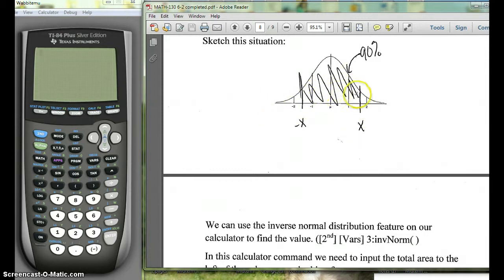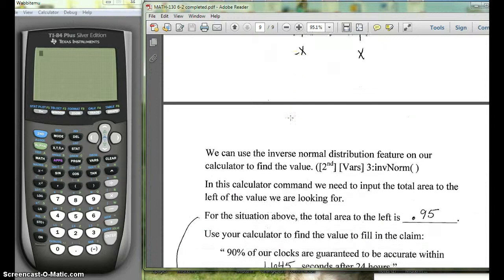Now if we have 90% in the middle, that means there's 5% on this tail and 5% on this tail. So that means if we use this left cutoff there's 95% or 0.95 probability to the left of that x value.